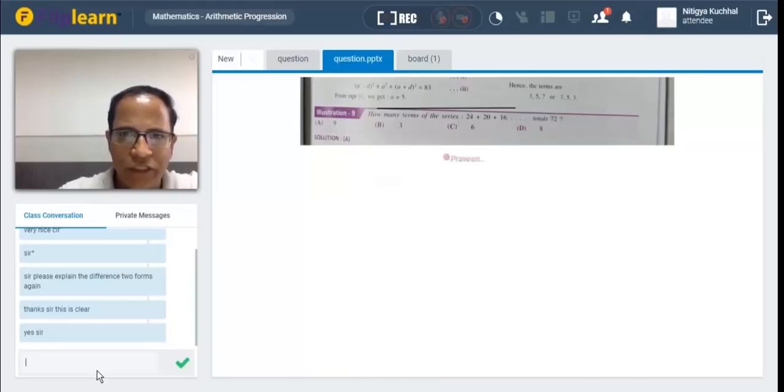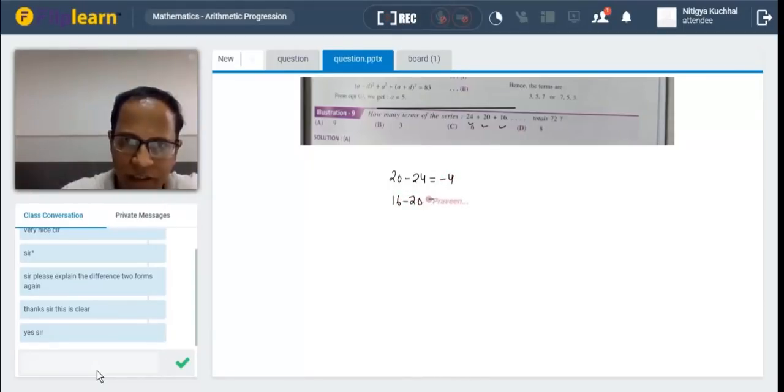So first of all, you need to check whether it is in AP or not. This is a very important thing. So let me check whether it is in AP. 20 minus 24, is it? It is minus 4, right. 16 minus 20, which is minus 4. This is an AP. Okay. This is an AP.